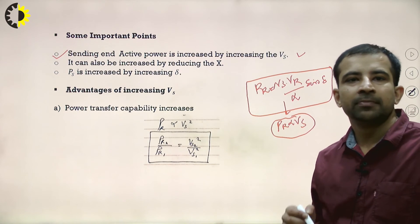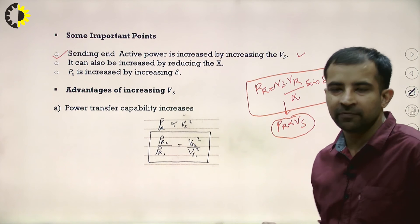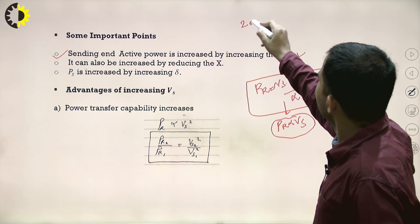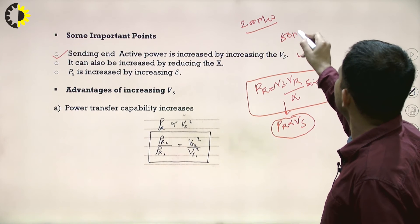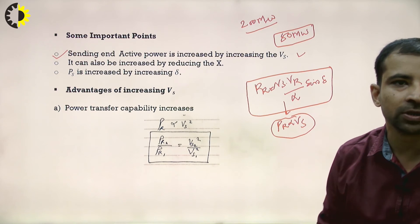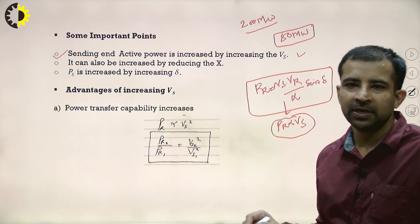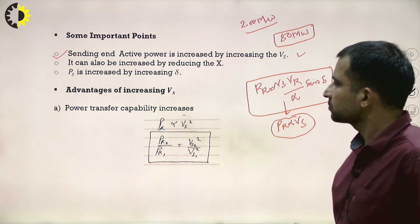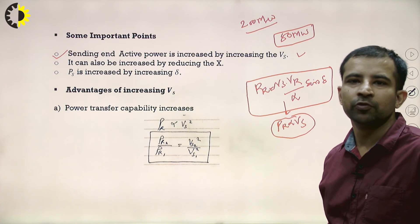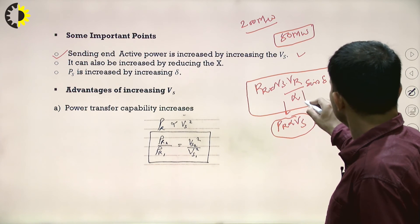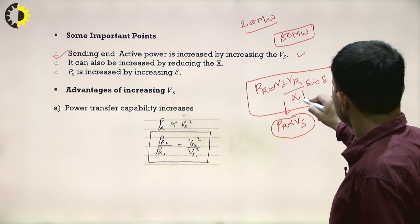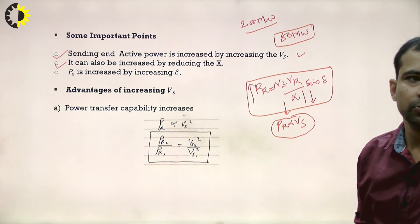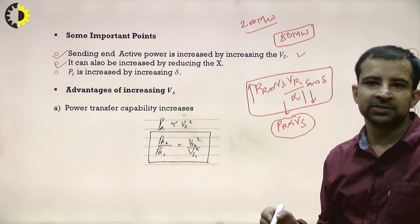Receiving-end power can also be increased by reducing the reactance X, since PR is inversely proportional to X. As X decreases, receiving-end power increases. Third, PS increases by increasing delta — PR is directly proportional to sin δ. If VS or VR is increased, PR increases; if X is reduced, PS also increases. These are the factors on which power transfer capability depends.